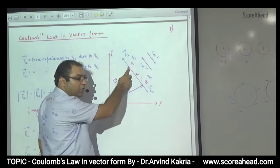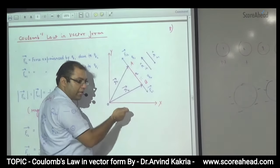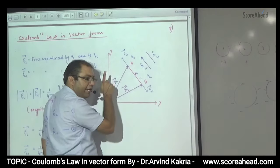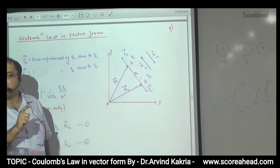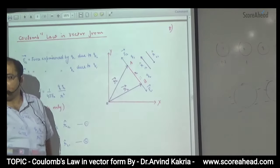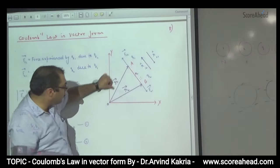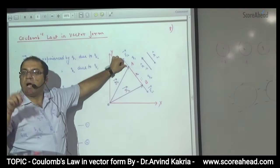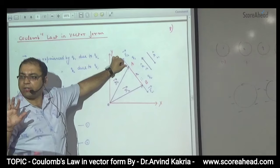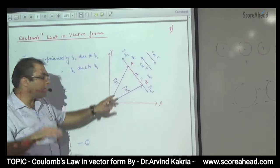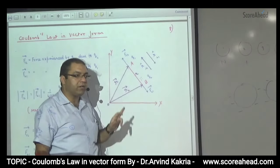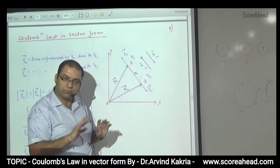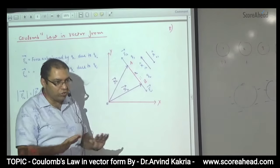To draw a position vector, what will I use? A position vector. And where does a position vector start? From the origin. So, the position vector from origin to the first charge is R1 vector. Similarly, the position vector to the second charge is R2 vector. The positions are now shown.